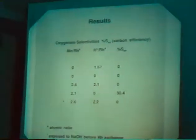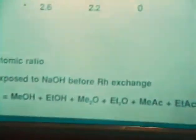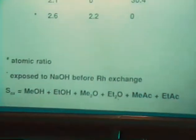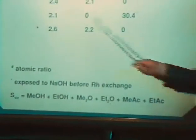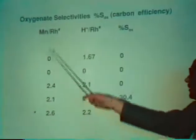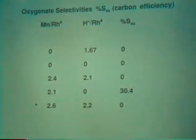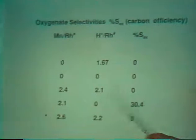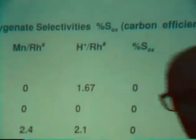So up to this point, we can conclude from the variety and totality of experiments: if you want to have higher selectivity for oxygenates, two conditions are necessary — the presence of the manganese (at the atomic ratio we usually use) and the absence of protons. Now you ask yourself: what are these protons doing? Why do we get no oxygenates?